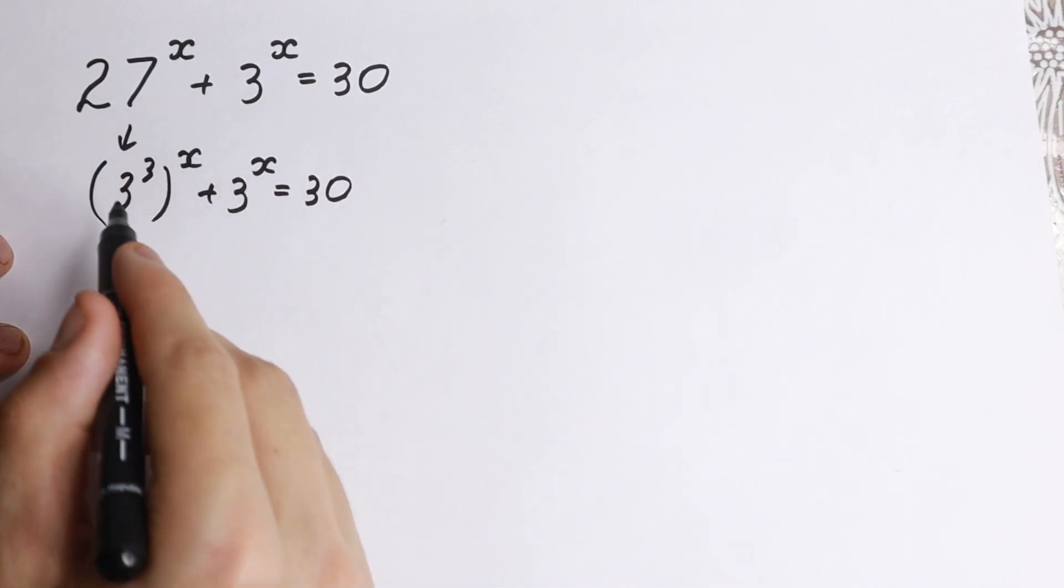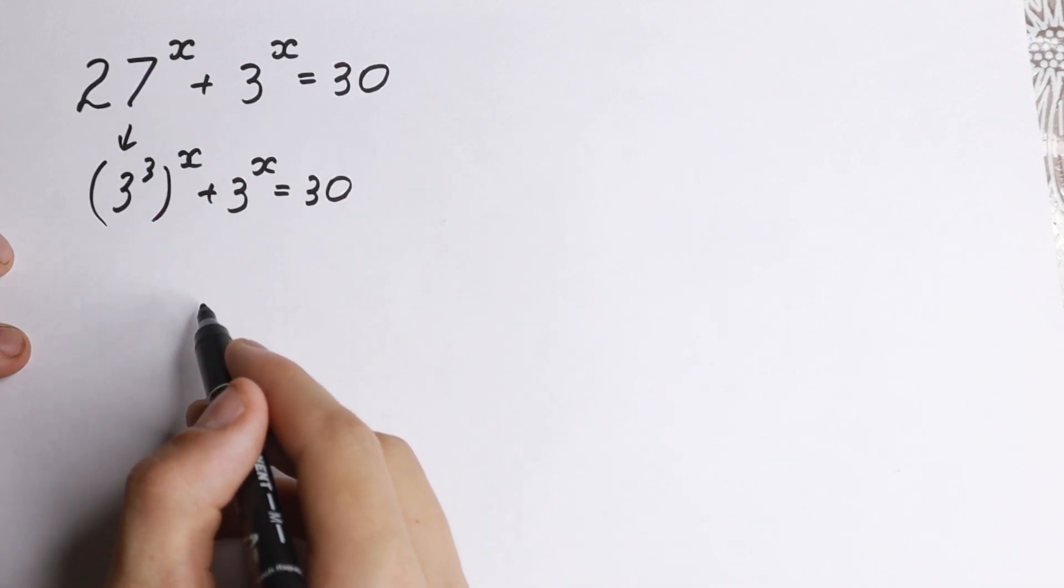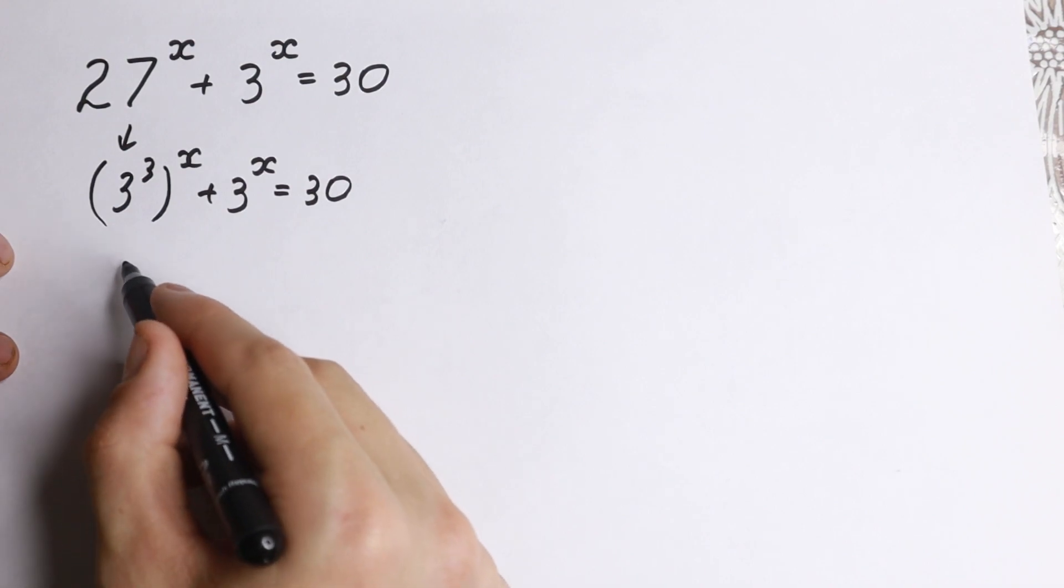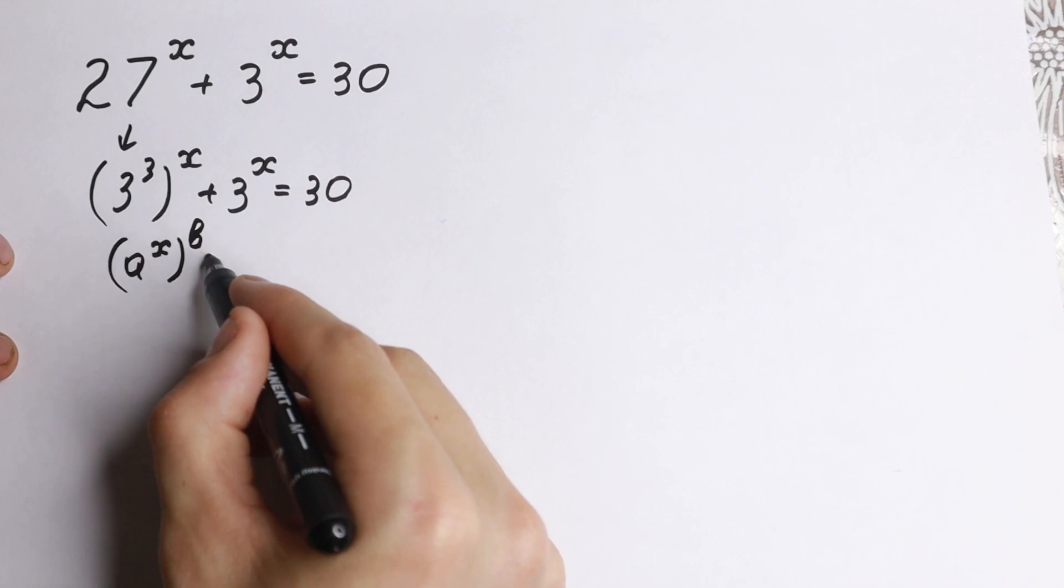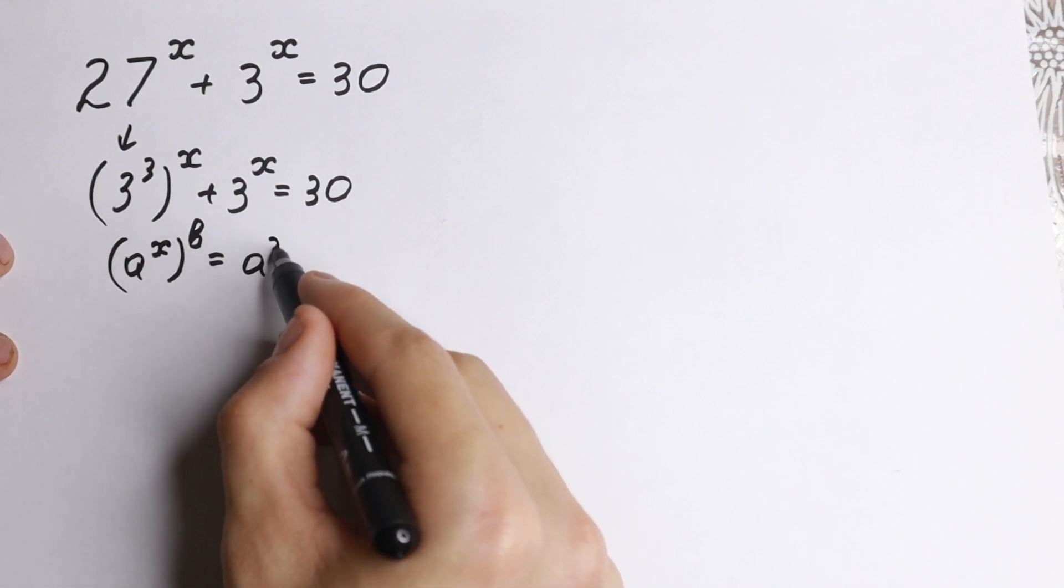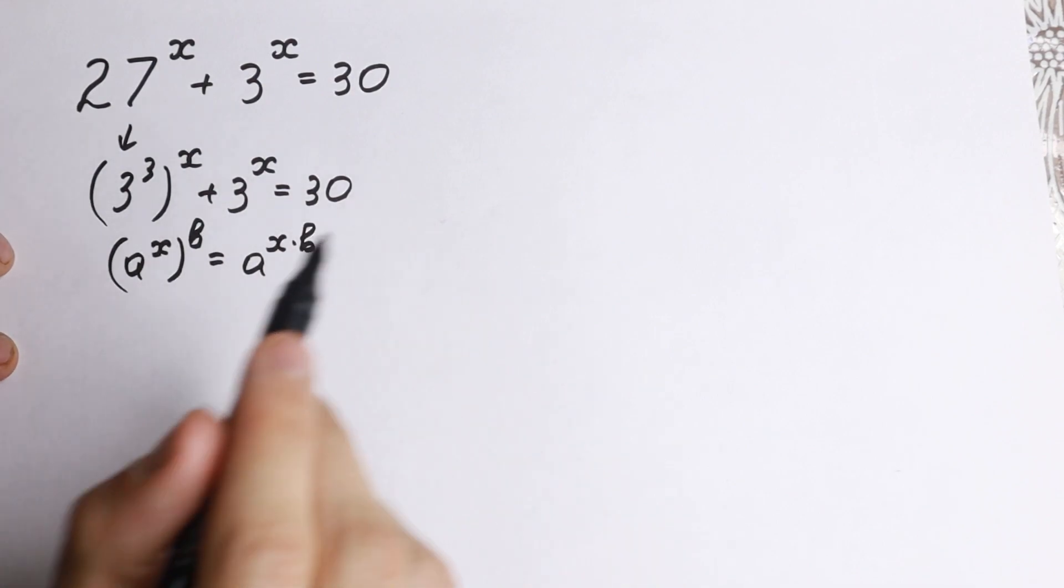So we have this expression, we just write 27 as 3 cubed. What are we going to do next? We need to know a really good rule. If we have a to the power x and we raise all of this to the power b, we need to write it as a to the power x times b. We need to multiply it.